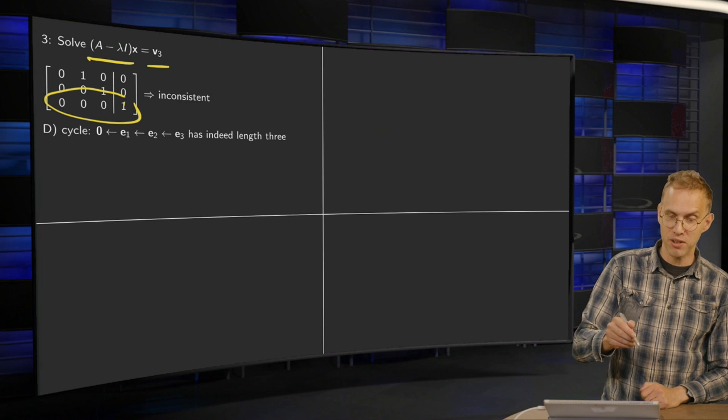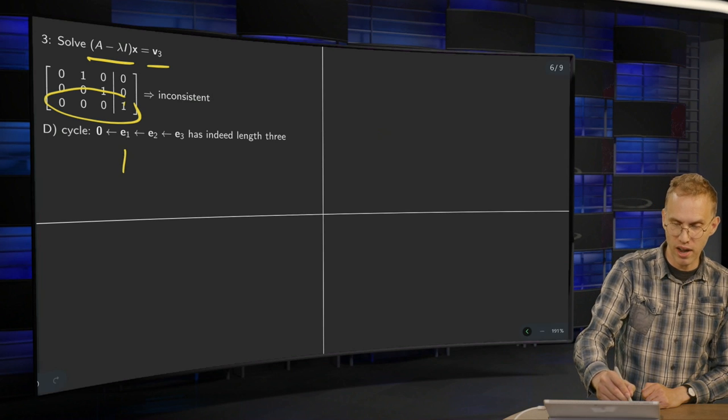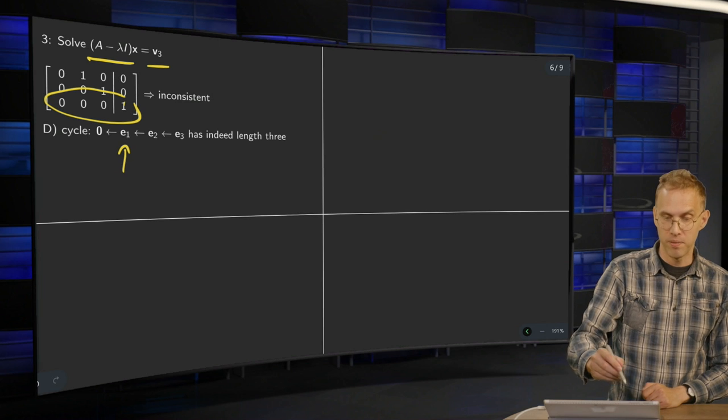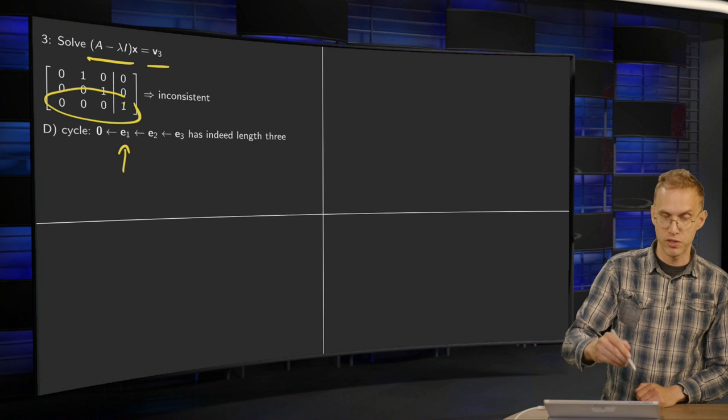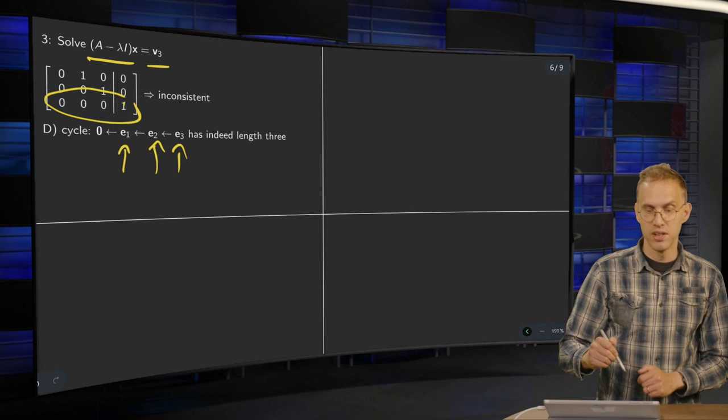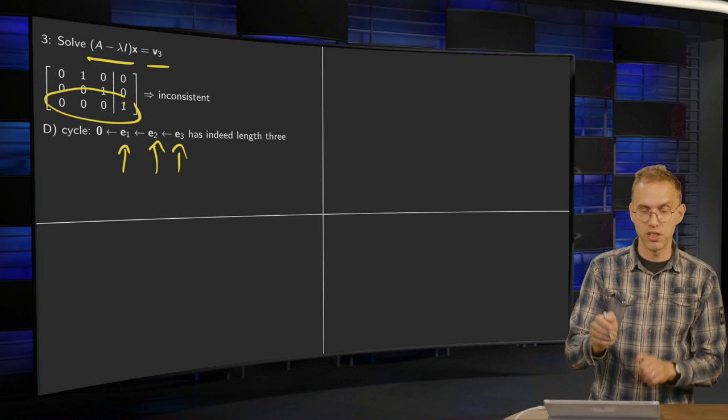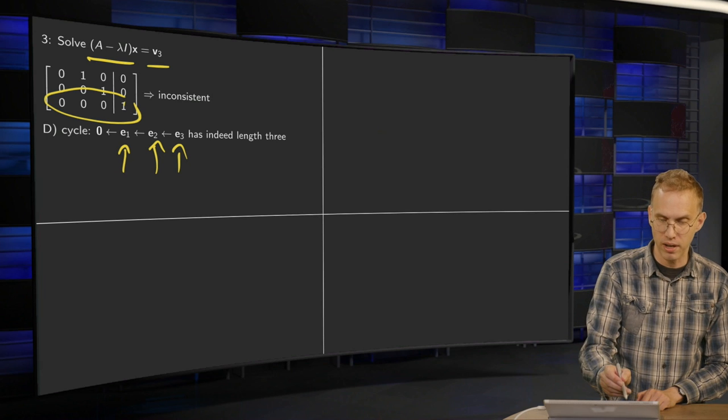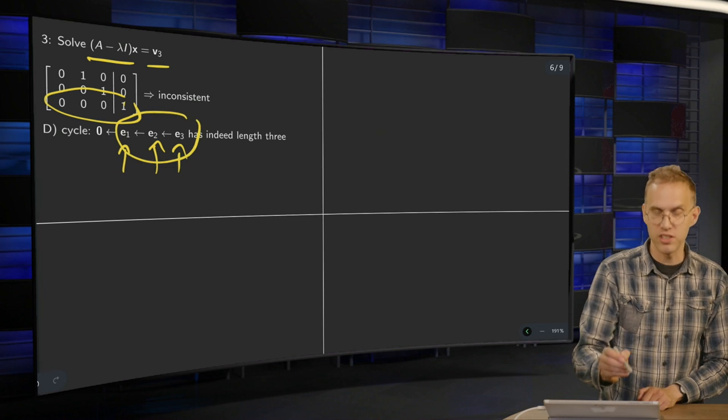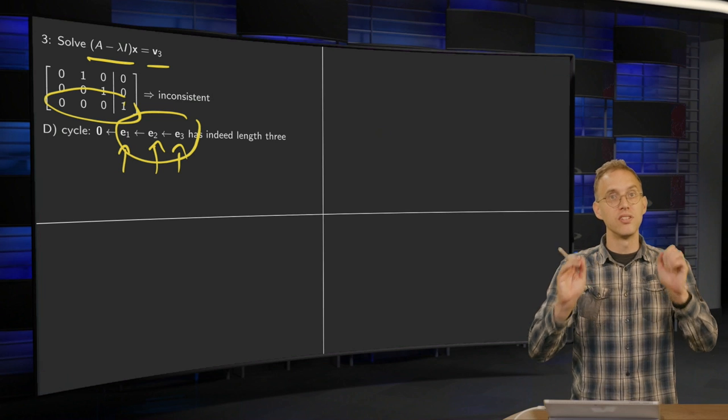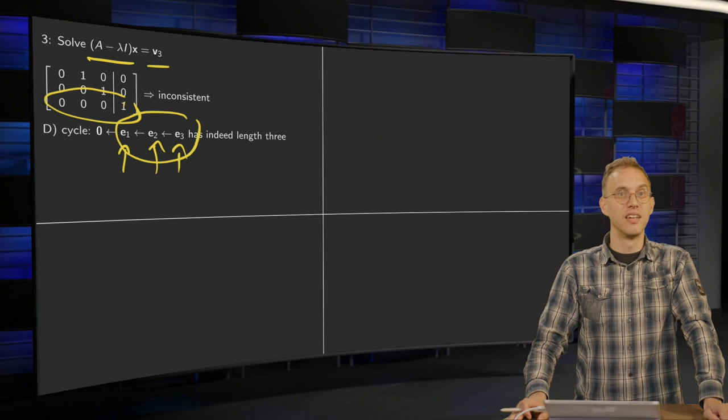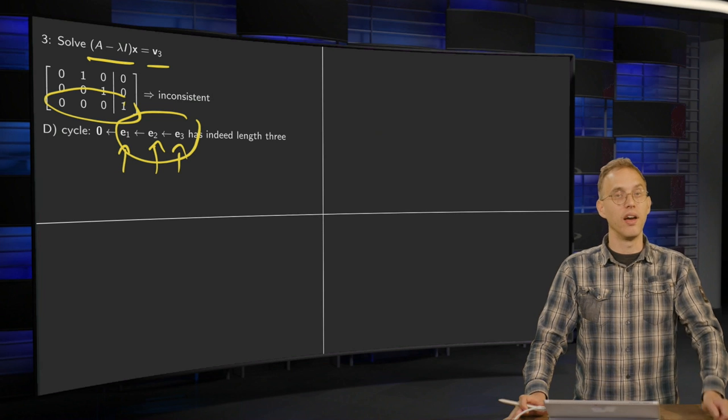So what's our cycle? This was our eigenvector. And the other ones were E2 and E3. So we have a cycle which has indeed length 3. For the computation of the length of the cycle, the 0, we do not include the 0. So we have indeed a cycle of length 3. So this is how you can find the cycle and the generalized eigenvectors of some matrix A.